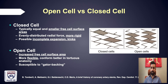A simplistic dichotomy of stent types is open cell versus closed cell. Closed cell stents have equal cells with smaller free cell surface area and more evenly distributed radial force, making them typically more rigid. Open cell stents have higher free cell surface area, making them more flexible and better conforming in tortuous anatomy, though the open cells make them susceptible to gator-backing. The majority of stents nowadays are variations of an open cell design.